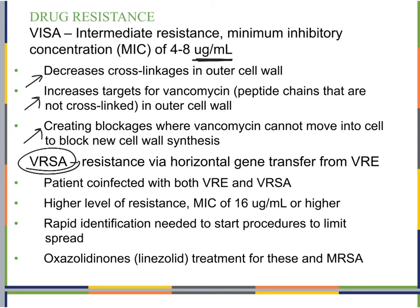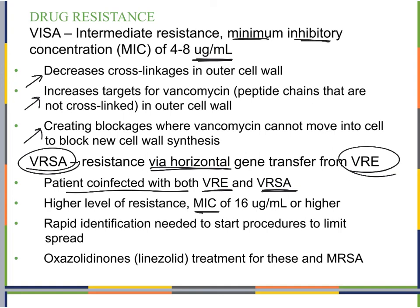For VRSA — fully resistant vancomycin-resistant Staph aureus — resistance comes via horizontal gene transfer from VRE (vancomycin-resistant enterococci). This is typically seen when a patient is co-infected with VRE and also has Staphylococcus aureus. At this higher level of resistance, the MIC is 16 micrograms per milliliter or higher. Even at very high levels, we see resistance, requiring rapid identification to limit spread since vancomycin is our last line of defense.